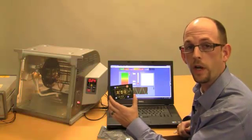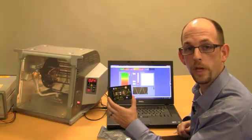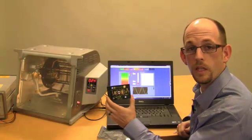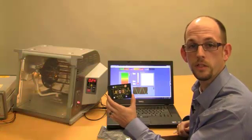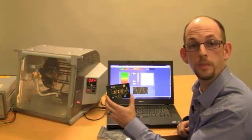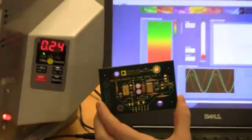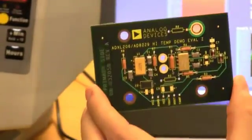Both of these parts are targeting very high temperature applications, such as downhole oil exploration, aerospace, and geothermal. The ADXL206 is a high performance analog output accelerometer rated up to 175C. The AD8229 is a very low noise instrumentation amplifier rated to 210C.